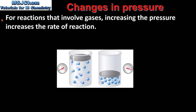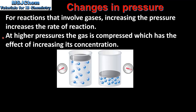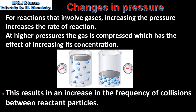And finally we have changes in pressure. For reactions that involve gases, increasing the pressure increases the rate of reaction. At higher pressures the gas is compressed, which has the effect of increasing its concentration. Here we can see two samples of gas: the sample on the left is at low pressure and the sample on the right is at higher pressure. The rate of reaction will be faster in the gas under higher pressure. So increasing the pressure results in an increase in the frequency of collisions between reactant particles and an increase in the rate of reaction.